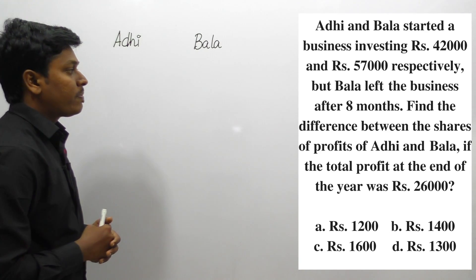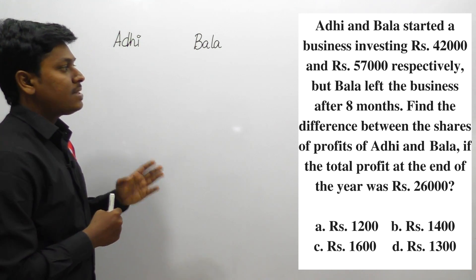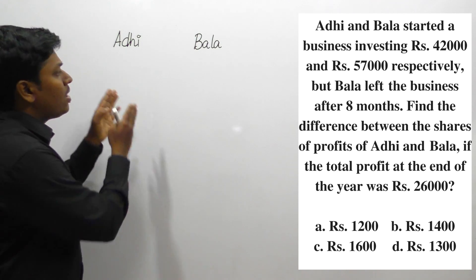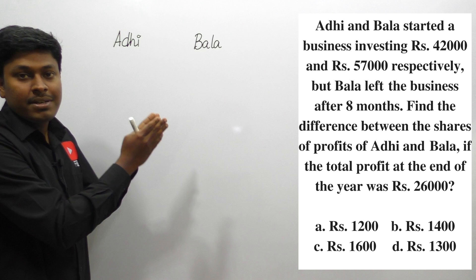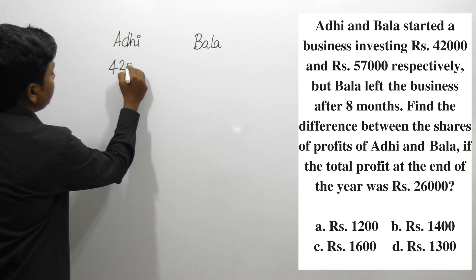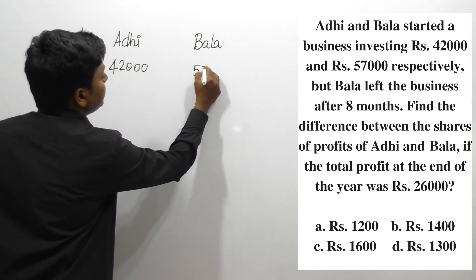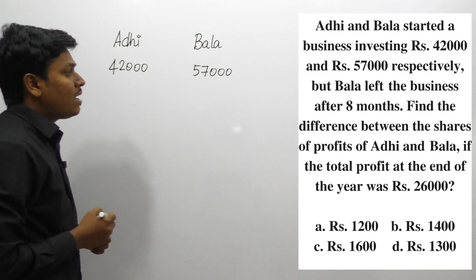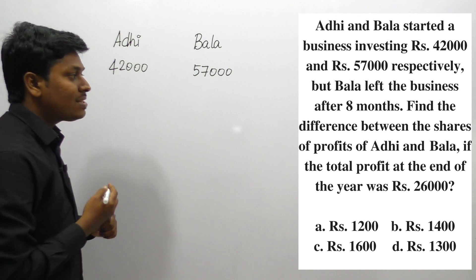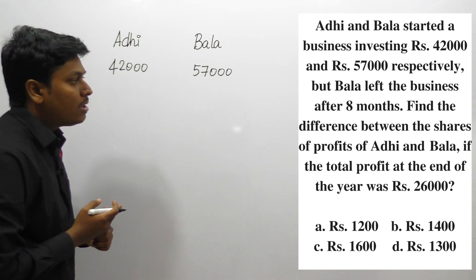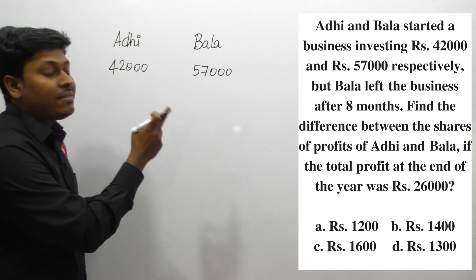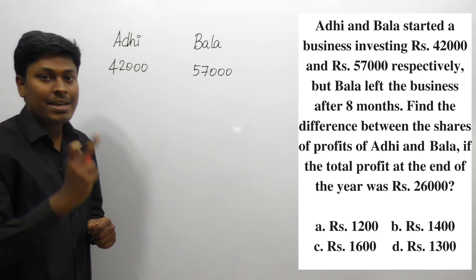Question number two: Adhi and Bala started a business investing 42,000 and 57,000 respectively. Both persons are investing some amount to start a business. But Bala left the business after 8 months. Find the difference between the share of profit for Adhi and Bala if the total profit at the end of the year was 26,000.